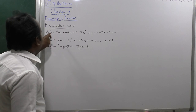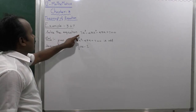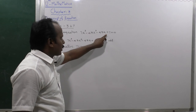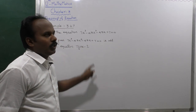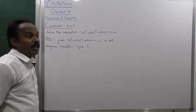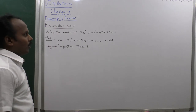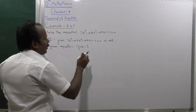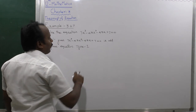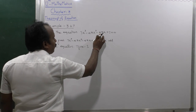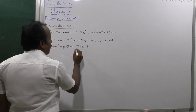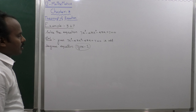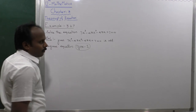Example 3.27. Solve the equation 7x³ - 43x² - 43x + 7 = 0. This is a reciprocal equation — Type 1 or Type 2. In Type 1, the first and last coefficients are equal with the same sign, and the second and third coefficients are equal with the same sign. In Type 2, the signs are different.